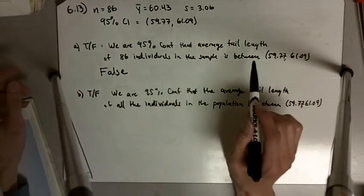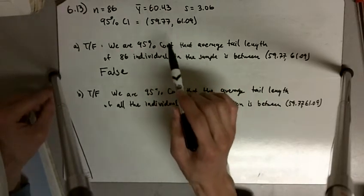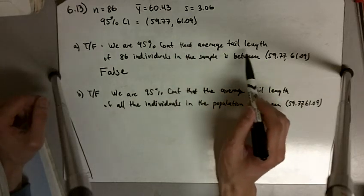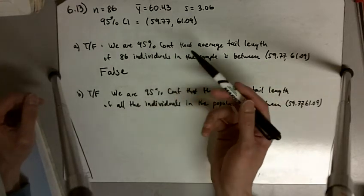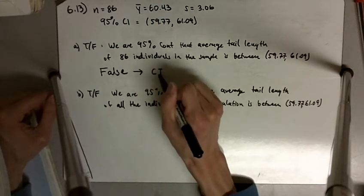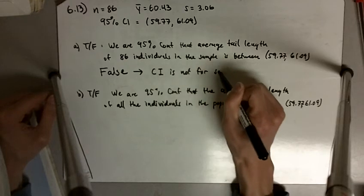Confidence intervals are never about the sample mean; they're always about the population mean. And here, the average tail length of 86 individuals is the sample mean, so this is false. CIs are not for sample means.